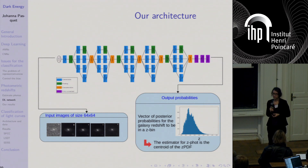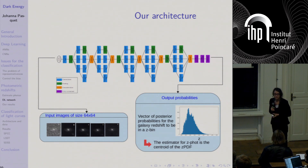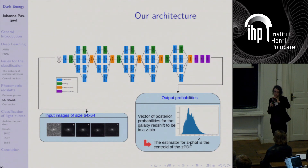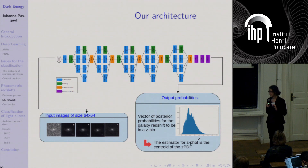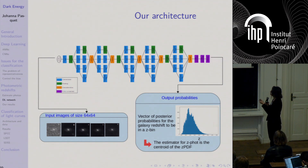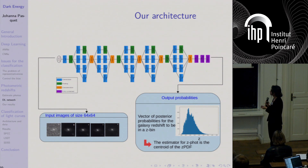I perform data augmentation by making rotations of the images — rotating by 90 degrees for example, which is a very simple data augmentation for this part. The network takes images as input and instead of making a regression step we do a classification one: we slice the input distribution into different bins and the algorithm gives a probability that the true redshift is inside each bin. In this way we can reconstruct the PDF and also estimate the photometric redshift.